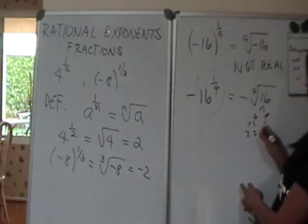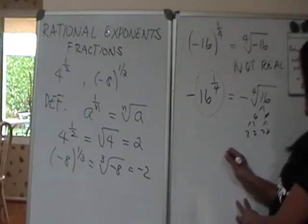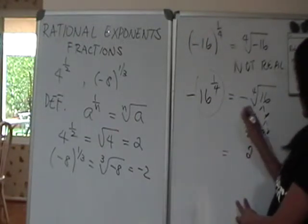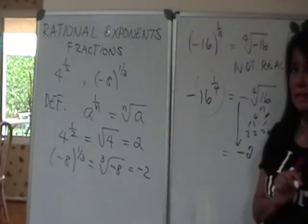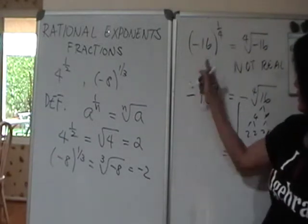And write this using the definition as the fourth root of 16. And you know the fourth root of 16 is, well, you have 4 times 4, then you have your four 2s. So the fourth root of 16 is 2.